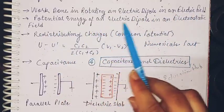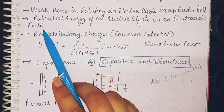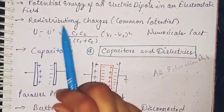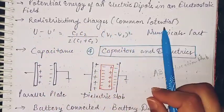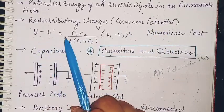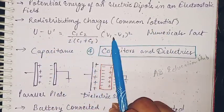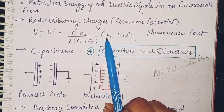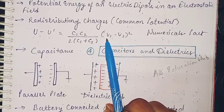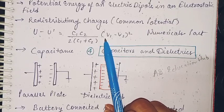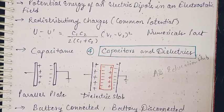Work done in rotating an electric dipole in an electric field. Potential energy of an electric dipole in an electrostatic field. Redistribution of charges, that is the common potential: U minus U' is equal to C1 C2 divided by 2 into C1 plus C2, V1 minus V2 whole square. Now you may expect this in numericals as well as derivations. You can practice this derivation three to four times because it is a little bit complicated, and students tend to ignore this derivation, but it may also come.